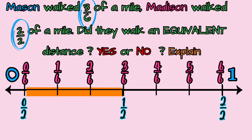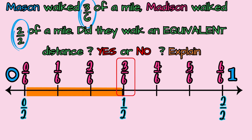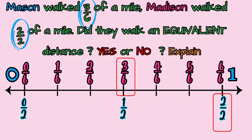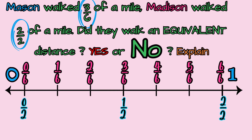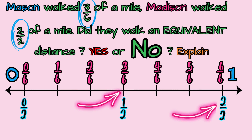Let's begin by finding the distance that Mason walked — three-sixths. Here we have the fraction three-sixths. And what is the distance that Madison walked? Madison walked two-halves. Here is the fraction two-halves. Did they walk an equivalent distance? Of course not — they did not walk the same distance. Here is the fraction three-sixths, and here is the fraction two-halves. The fraction two-halves takes more distance on the number line than three-sixths, so Madison walked more than Mason.